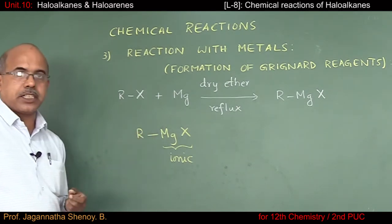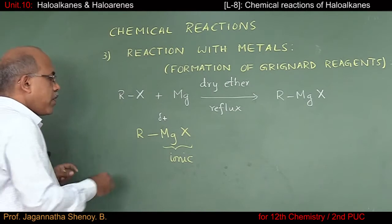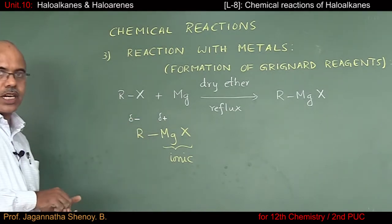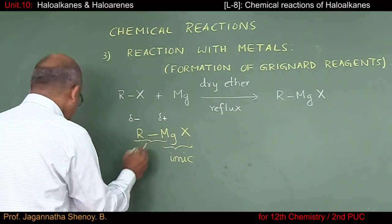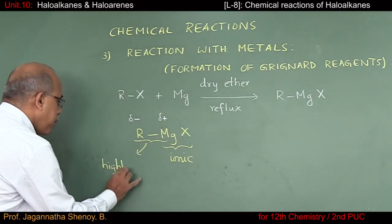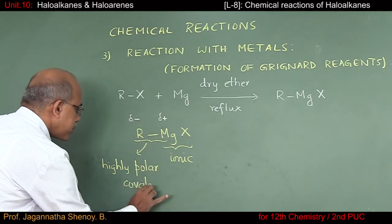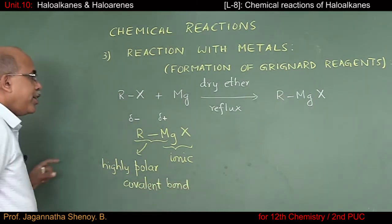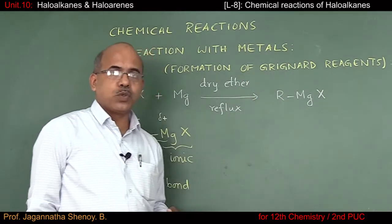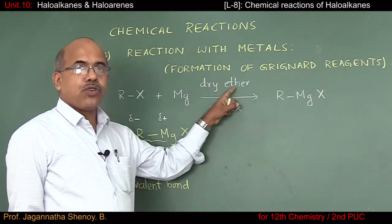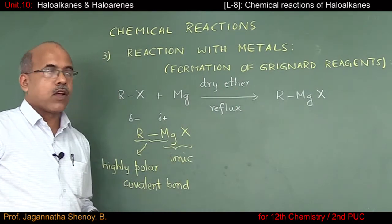Carbon is more electronegative than magnesium. That is why magnesium acquires a partial positive charge and carbon acquires a partial negative charge. Now the question is: during the formation of a Grignard reagent or when a Grignard reagent is used in any organic reaction, whatever ether you use as a solvent should be dry and alcohol-free. What is the reason for that?